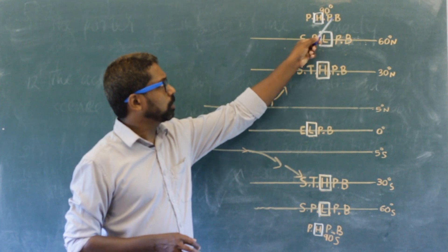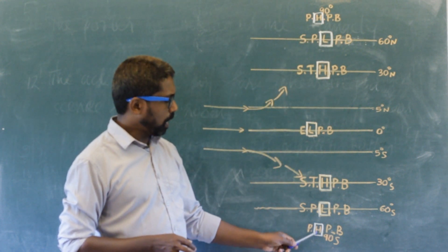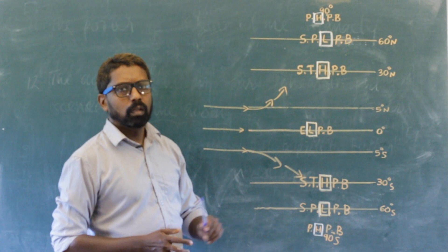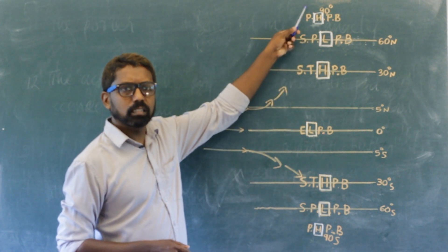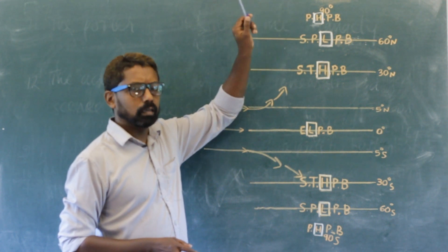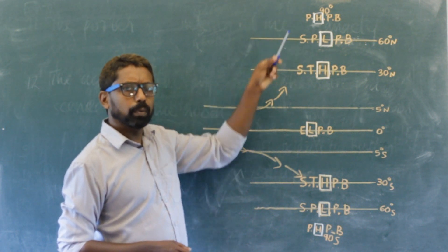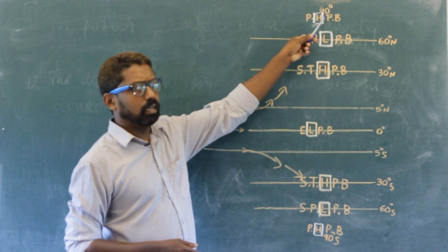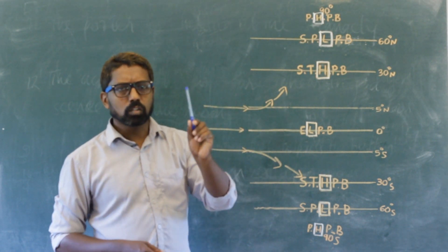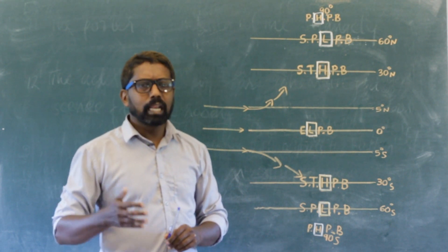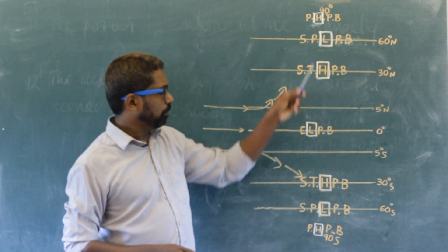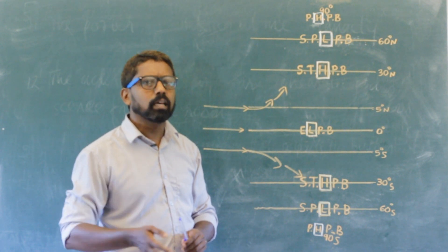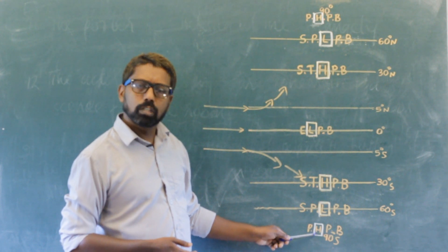Polar high pressure belt. This zone experiences severe cold throughout the year. As a result, the air remains chilled under the extreme cold that prevails over the poles. Of course, this contributes to the steady high pressure experienced here. In this zone, there is always high pressure.